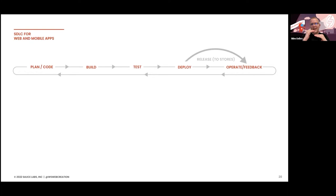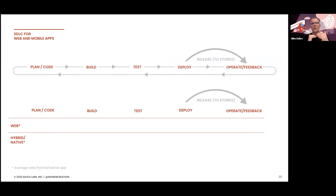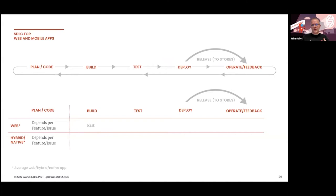Let's compare the phases for web versus hybrid and native applications. In the planning and coding phase, there's not a real difference, assuming similar complexity. But when we look at the building phase, building a web application is pretty fast — within two or three minutes you should be able to build it and maybe deploy it. Compare that with hybrid or native applications: medium to slow. Building an iOS application can take between five and fifty minutes, depending on the machine and environment.